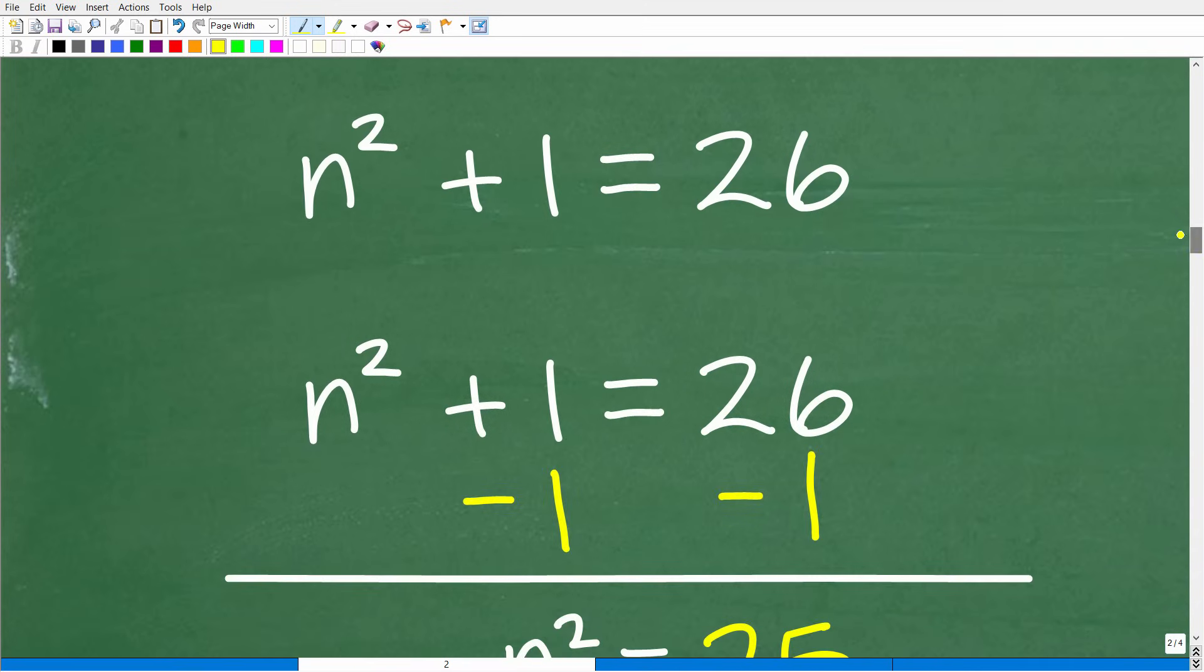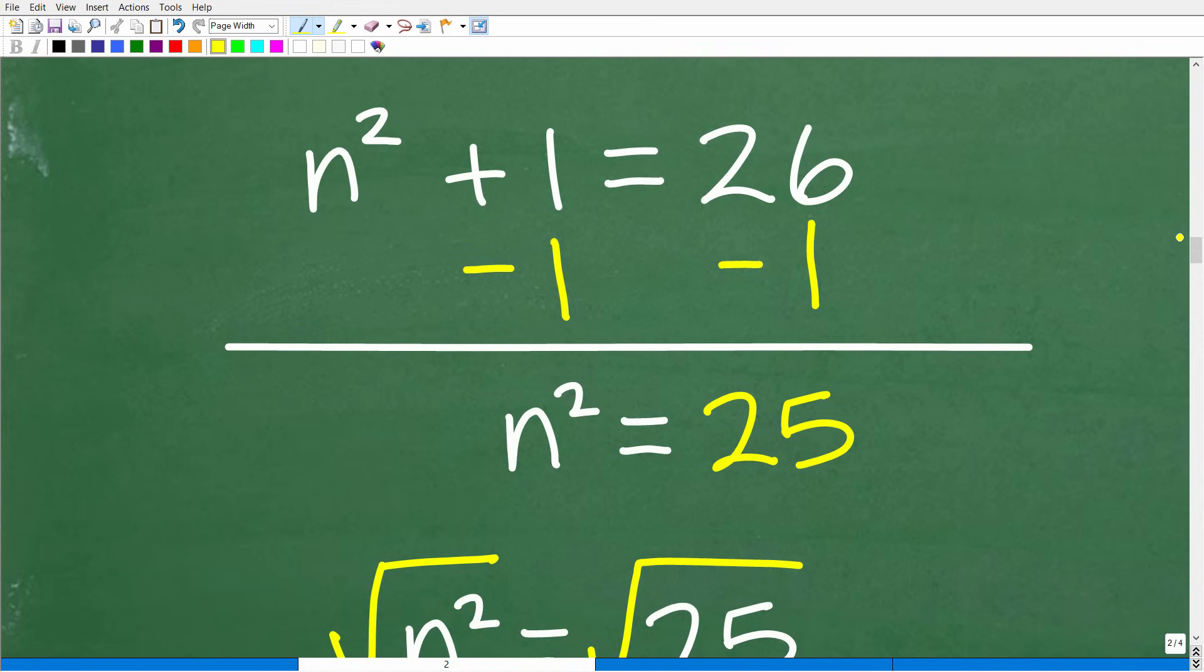Now back to the problem. Here is the equation, n squared plus 1 is equal to 26. This particular one is very easy because we just have an n squared. All we need to do is get the n squared on one side and one number on the other side. We can do that easily by subtracting 1 from both sides of the equation. When we do that, we get n squared equals 25.